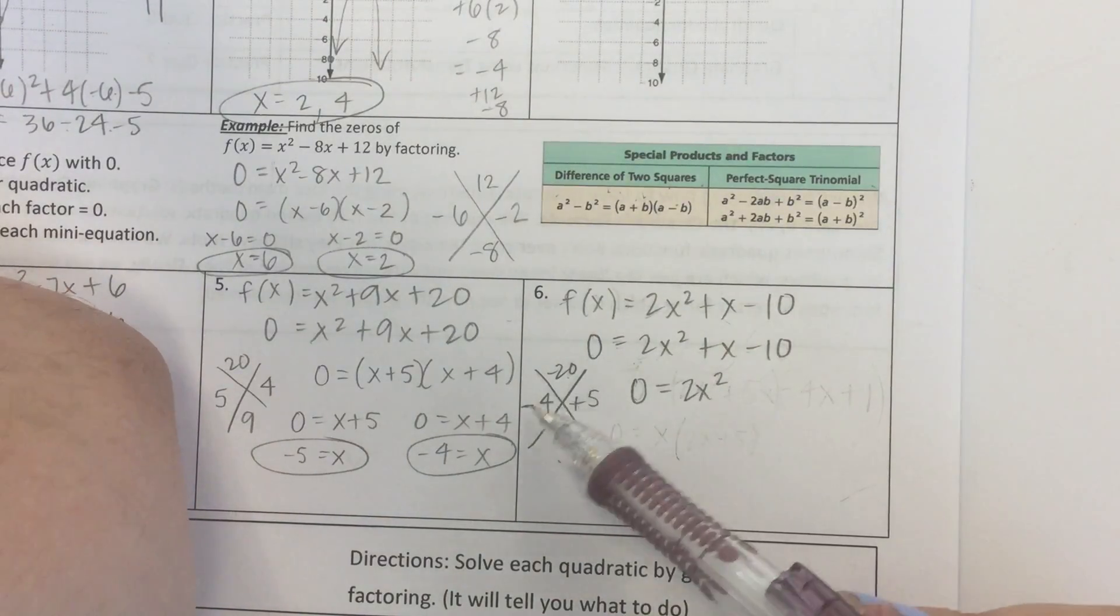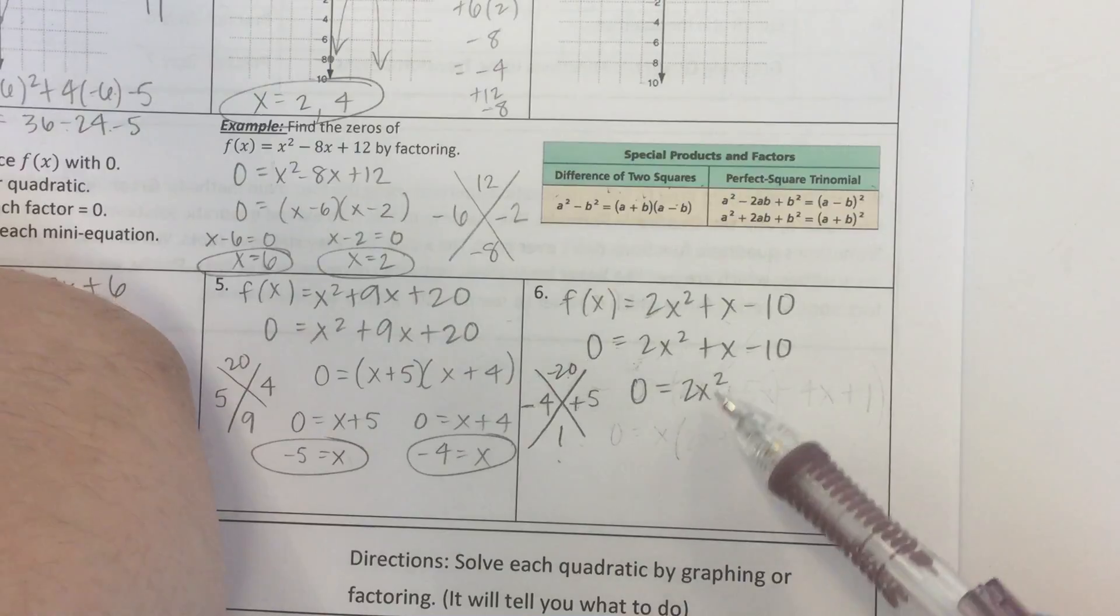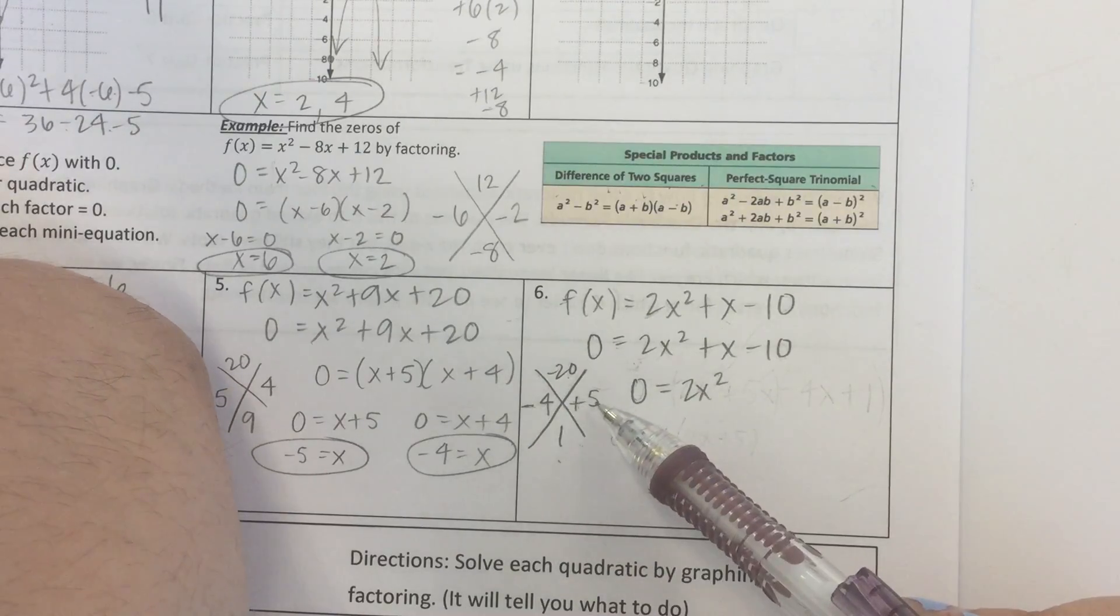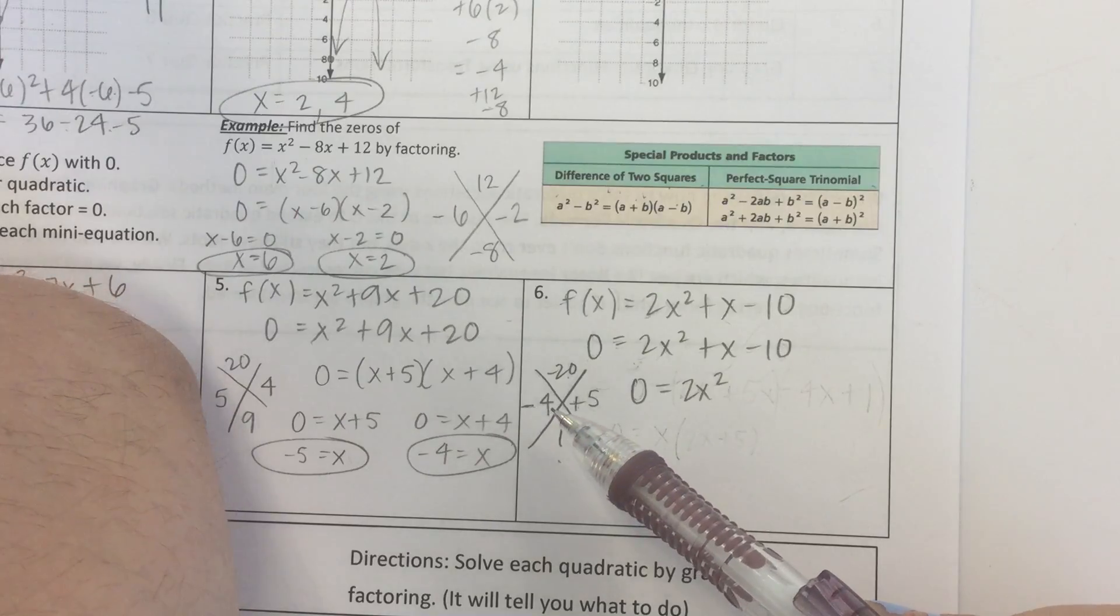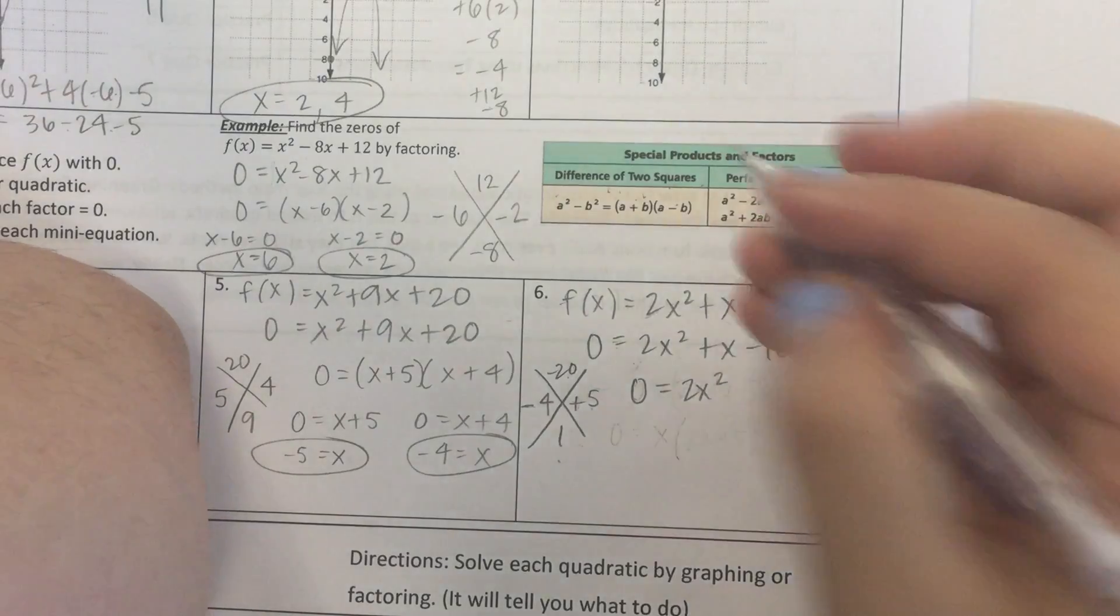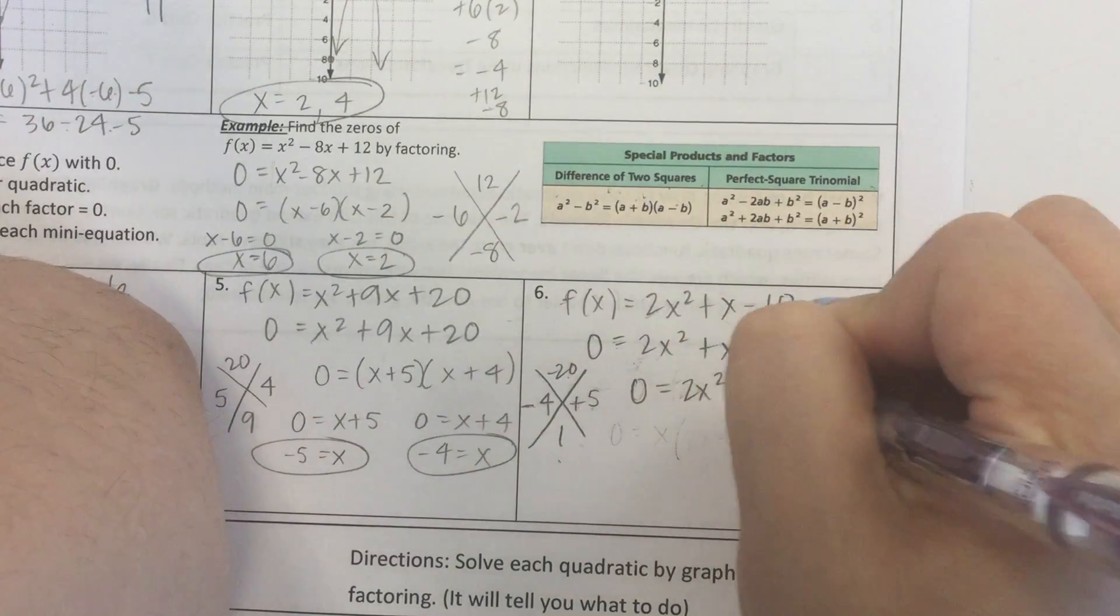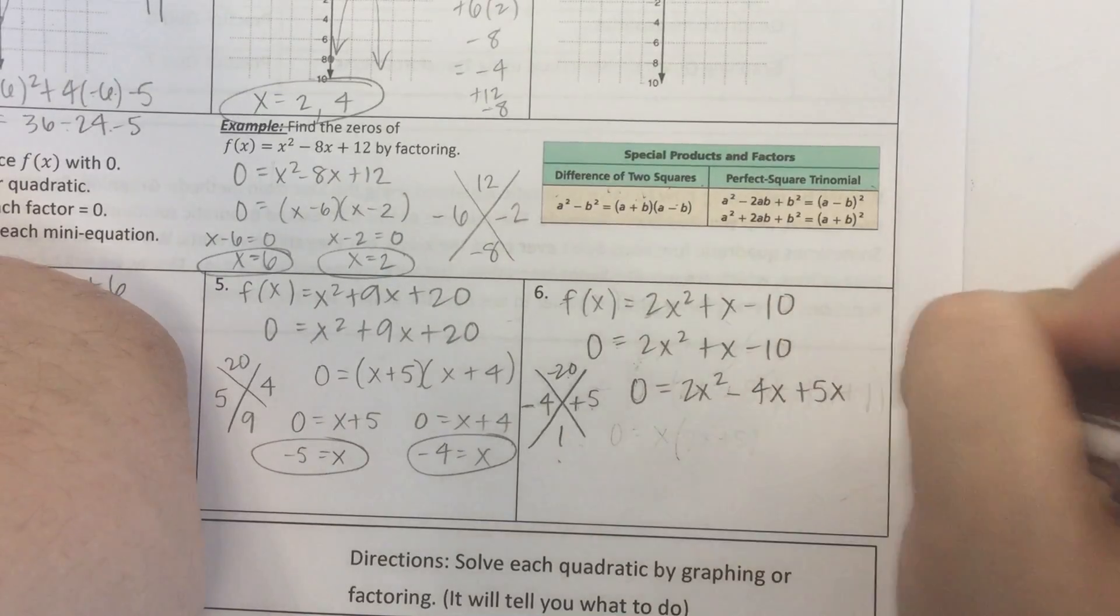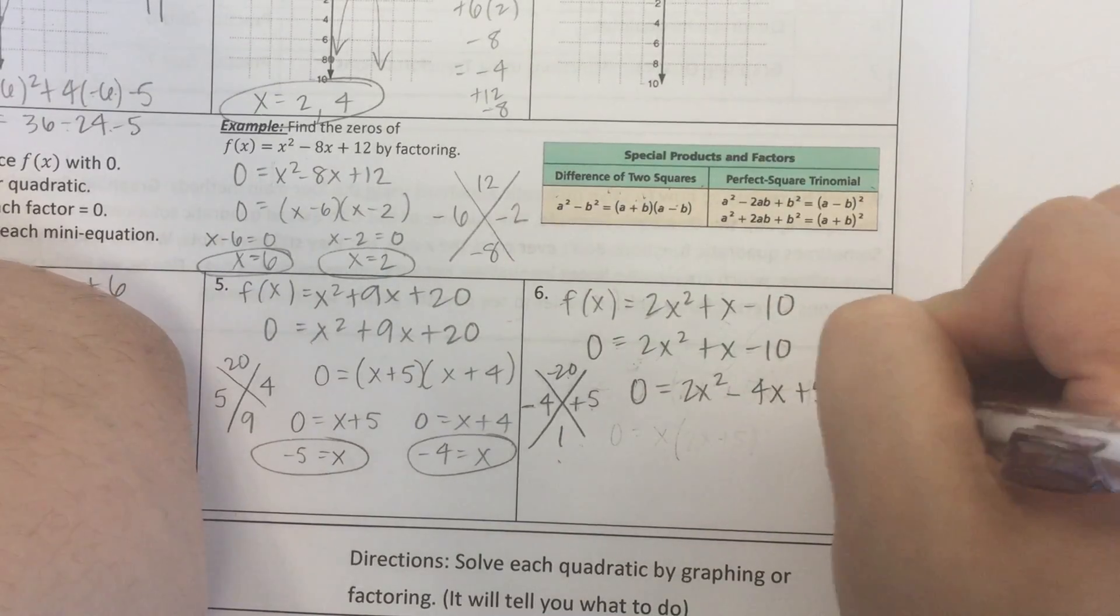Now, we're going to take one of these numbers and put it right next to the 2x squared. And we have to figure out which one really gets along with 2. Does negative 4 get along with 2 or does 5 get along with 2? I think negative 4 gets along with 2. So, we're going to go negative 4, attach an x to it, plus 5x minus 10.